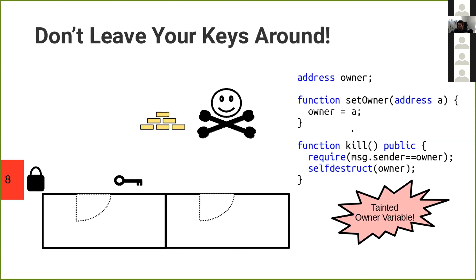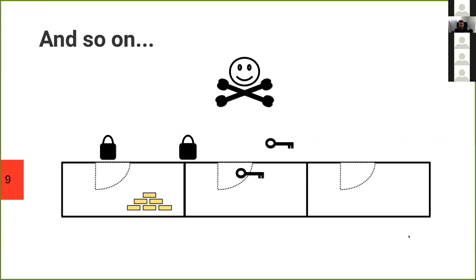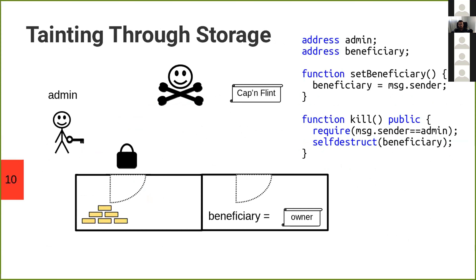This kind of vulnerability is called tainted owner variable in our analysis framework. eTainter's analysis is recursive in nature. It uses sound program analysis principles and it can find vulnerabilities that need to be executed over several transactions, which are hard for humans to simply eyeball. Ethereum has storage which persists across multiple transactions.